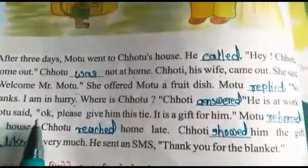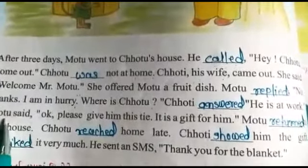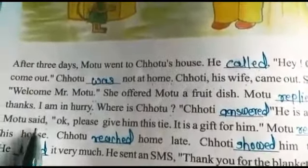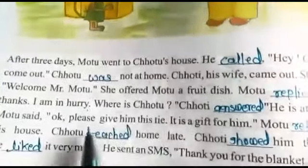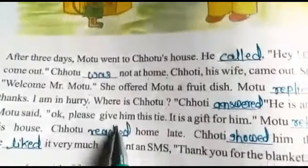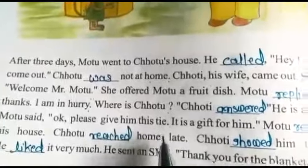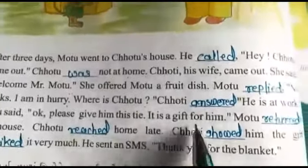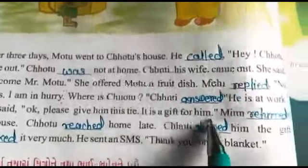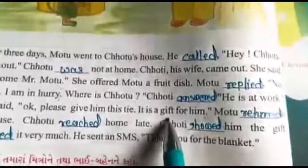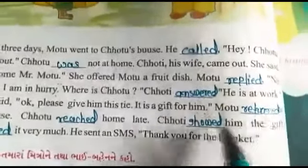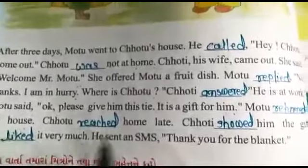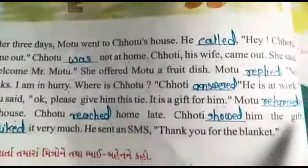Mojo said OK — Mojo ae kaju, ok. 'Please give him this tie. It is a gift for him. A tena mathe bhaet chhe.' Mojo returned to his house. Mojo tena gare pacho ao.